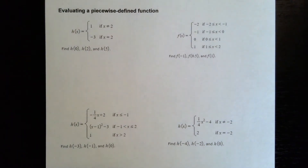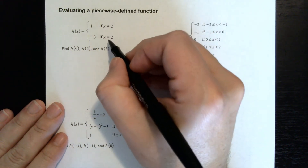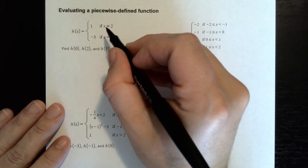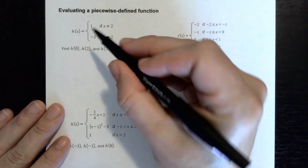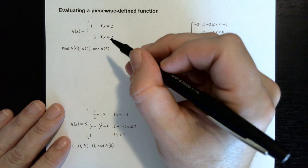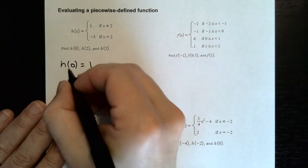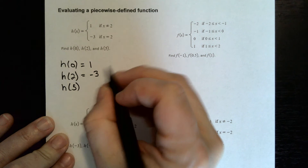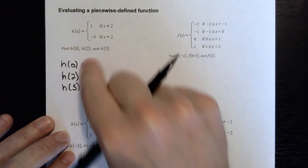For the last section, we're evaluating piecewise defined functions — functions split into pieces based on the domain. For example, if x equals 2 the value is negative 3; otherwise the answer is always 1. So h of 0: that's not 2, so the answer is 1. h of 2: that equals 2, so the answer is negative 3. h of 5: that's not 2, so the answer is 1. Any x value other than 2 gives you 1.